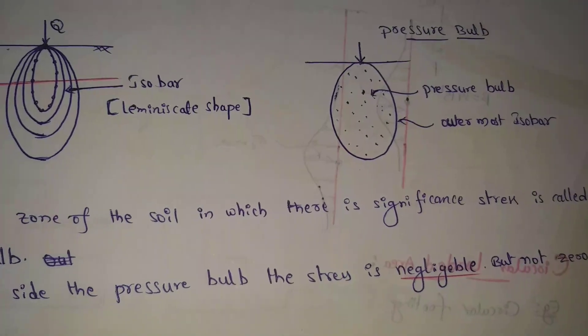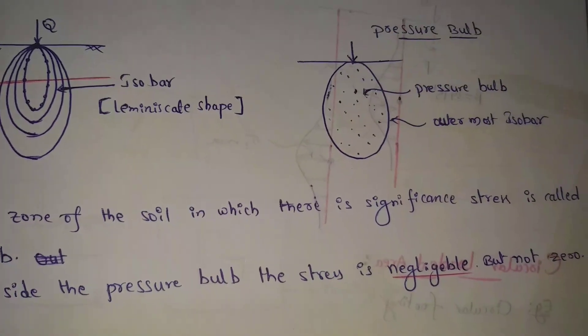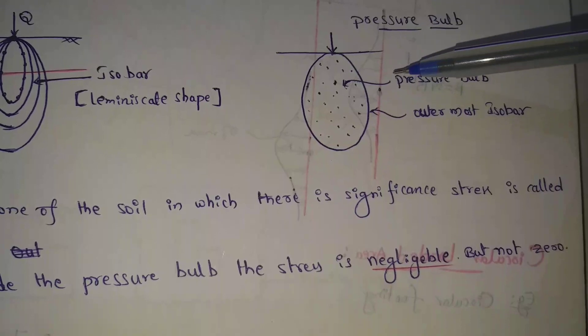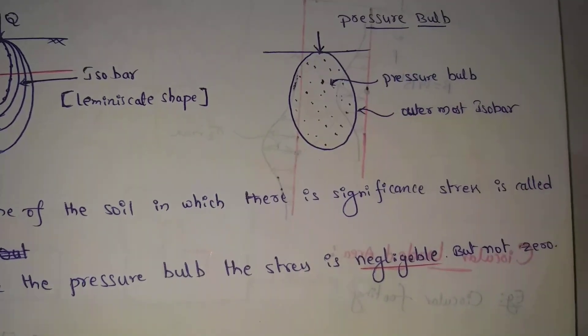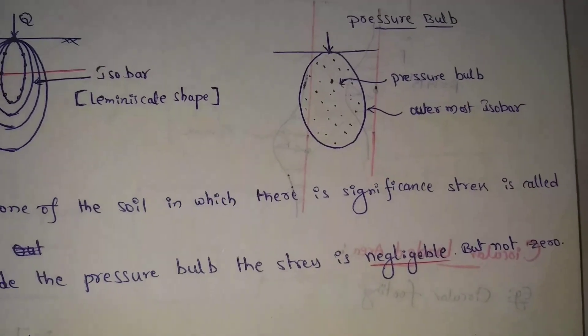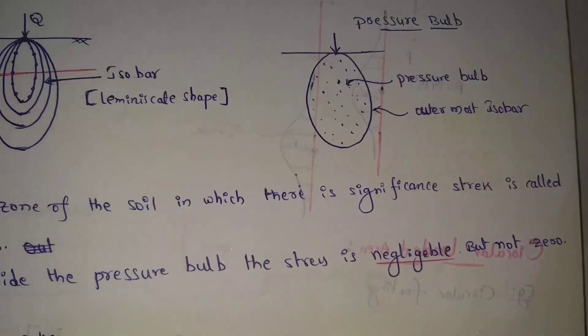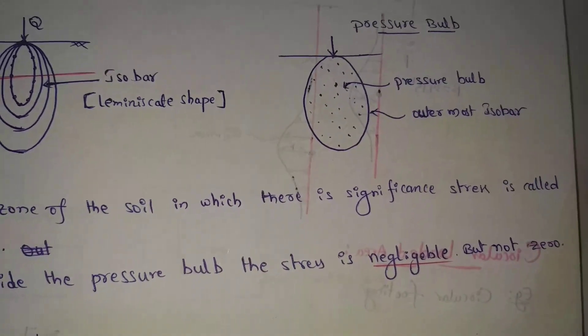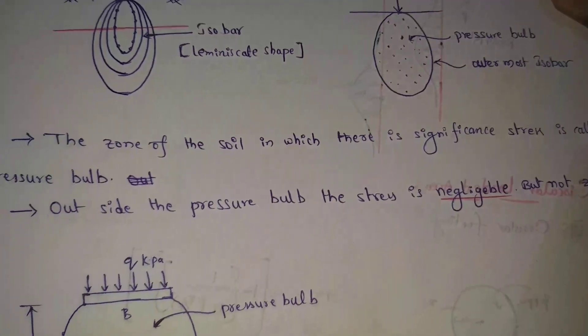The outermost isobar is the stress negligible, but the outermost isobar is the stress negligible but not zero.